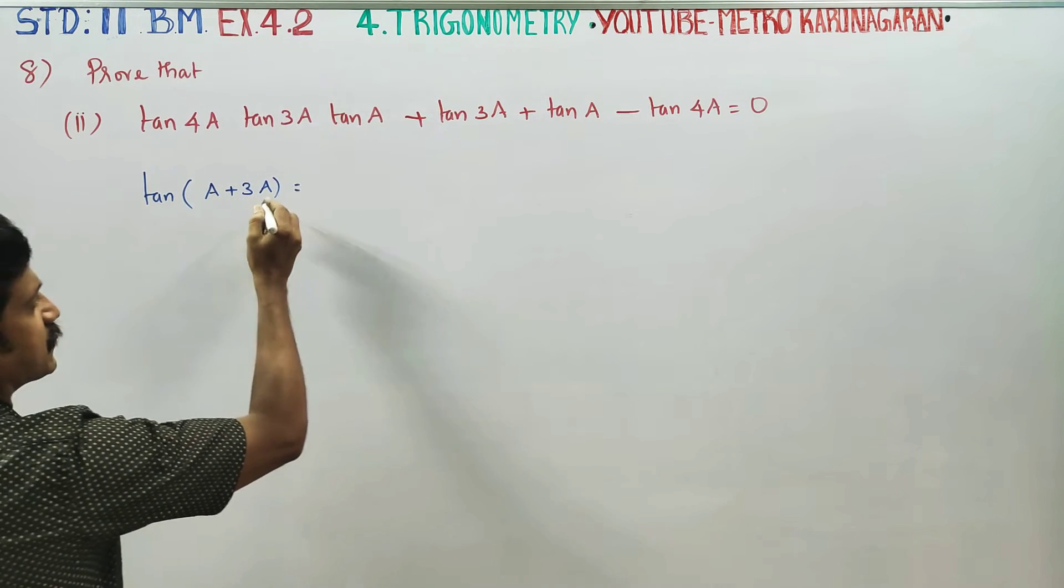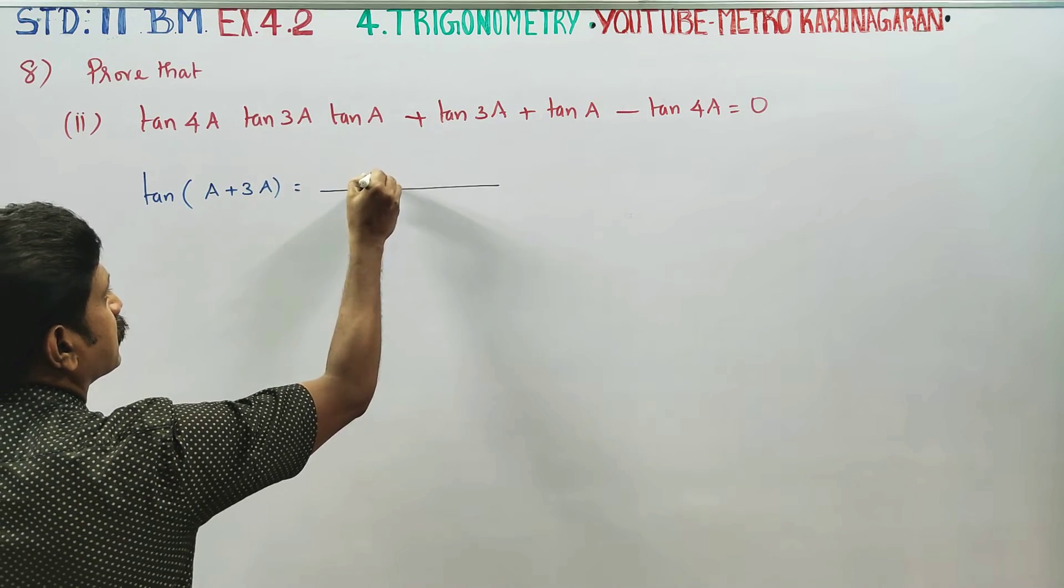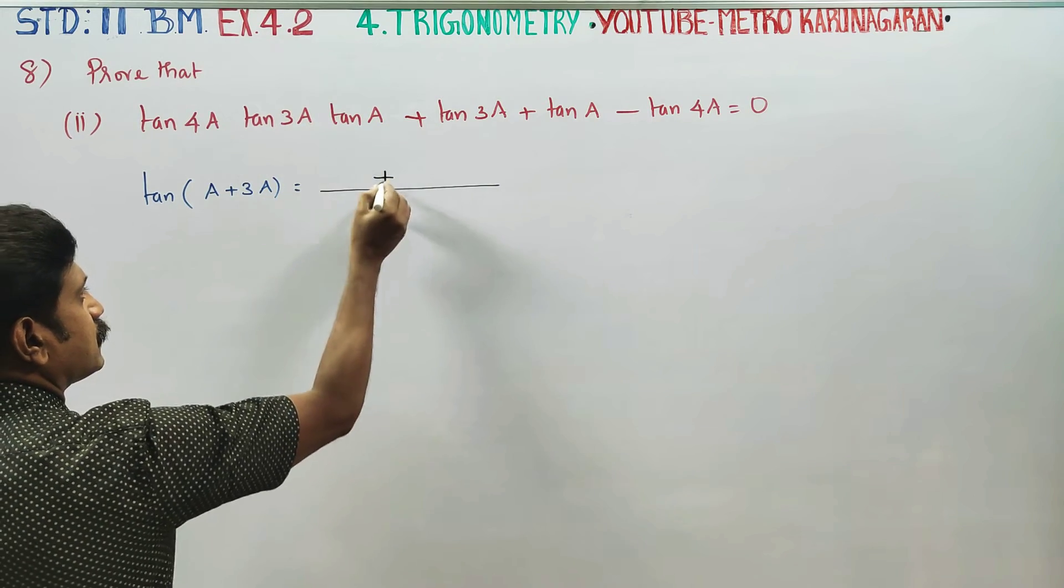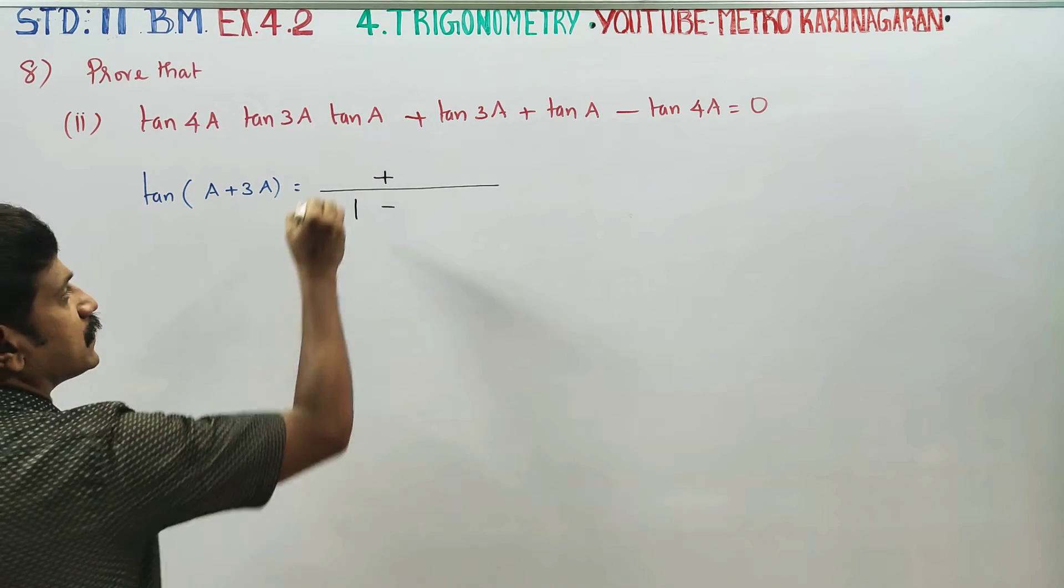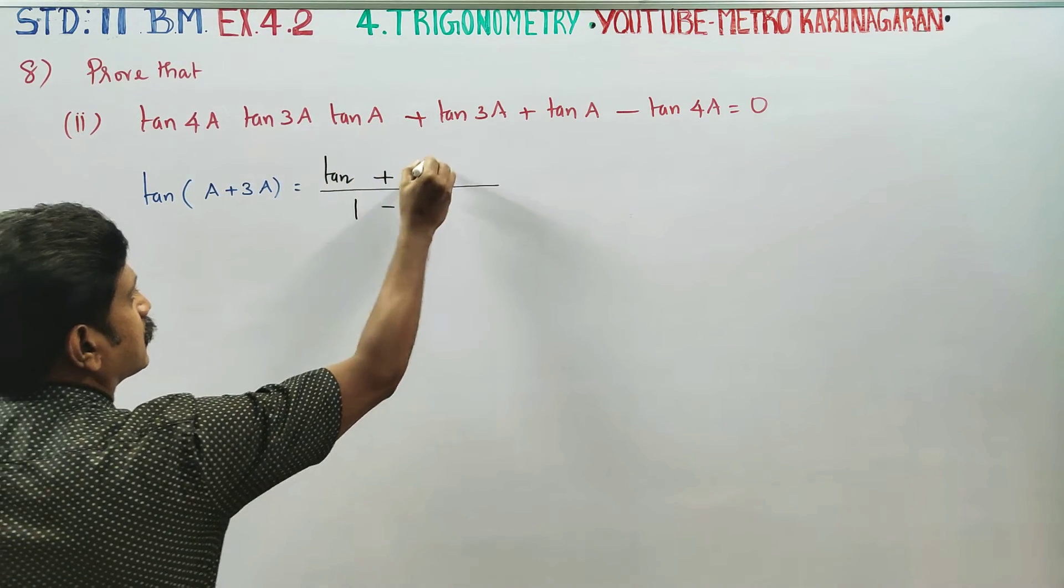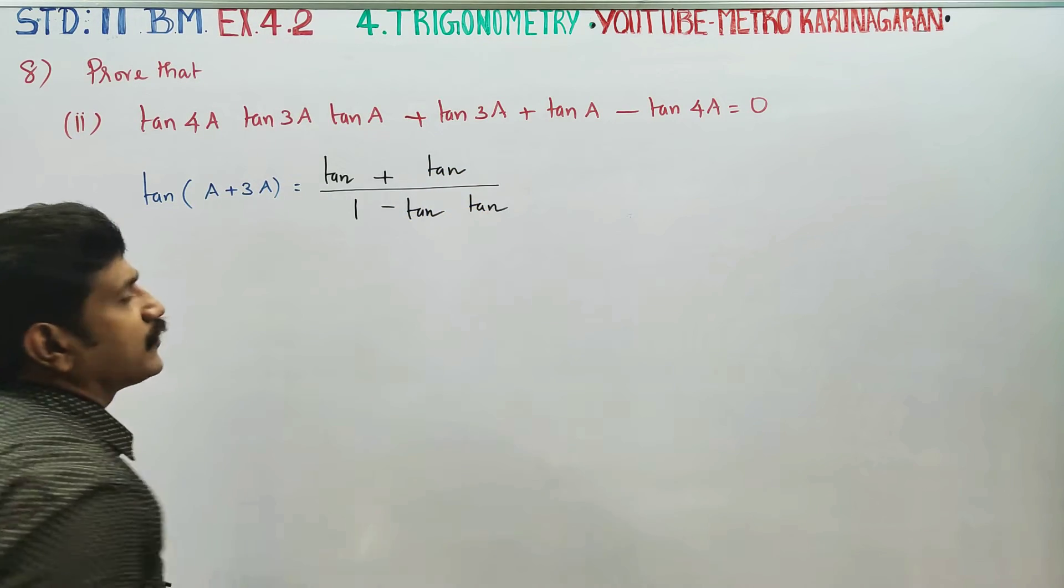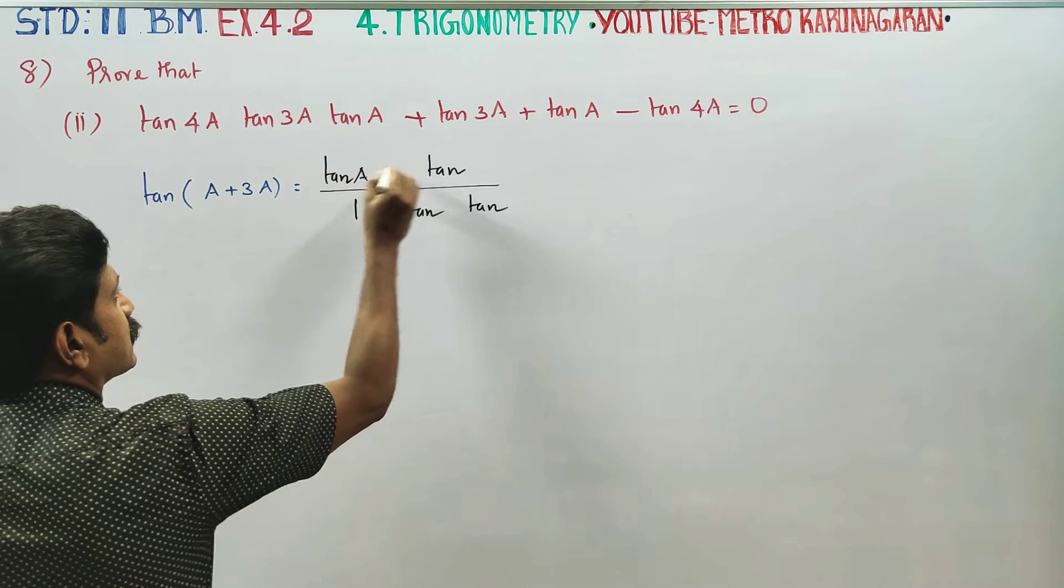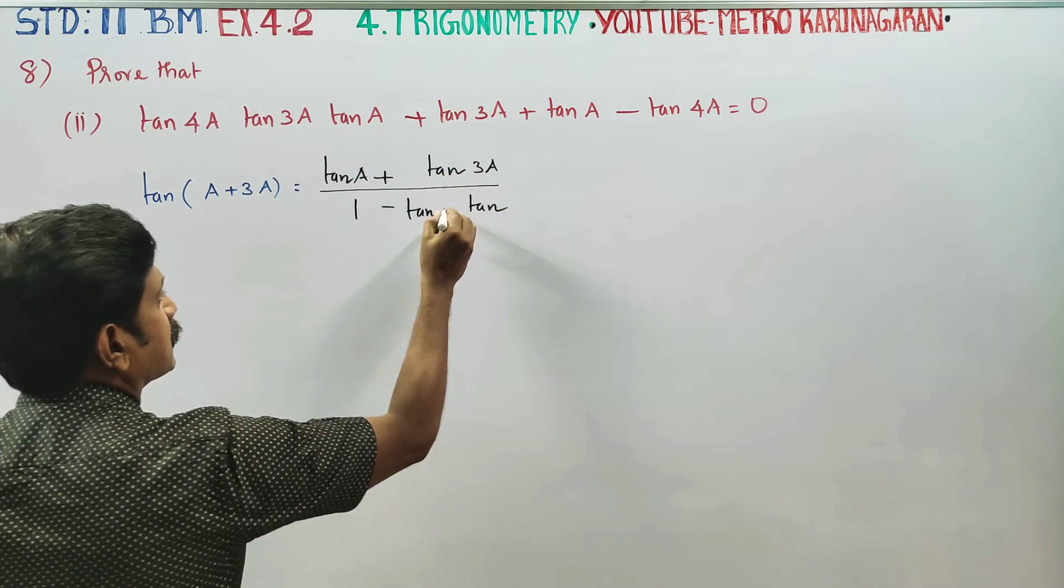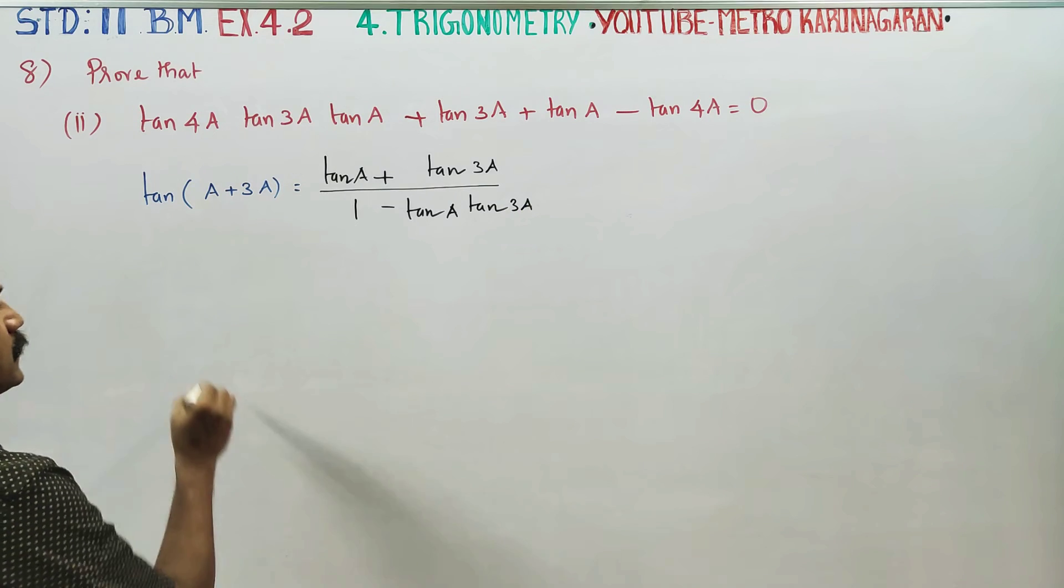What is tan A plus 3A? The formula is tan A plus tan 3A. So tan of A plus 4A. First is A, second is 3A. A is 3A. Next stage...